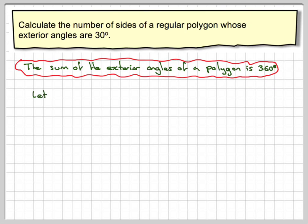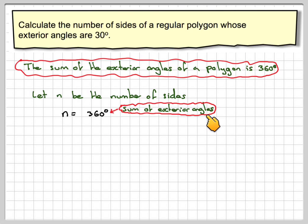this makes this problem quite easy because if we let n be the number of sides, then n will be 360, the sum of the exterior angles, divided by 30 degrees, the size of each exterior angle.